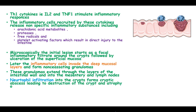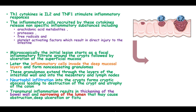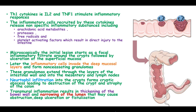Neutrophilic infiltration within the crypts forms crypt abscesses, leading to the destruction of the crypt and atrophy of the colon. Transmural inflammation results in thickening of the bowel wall, narrowing of the lumen, and causing obstruction.